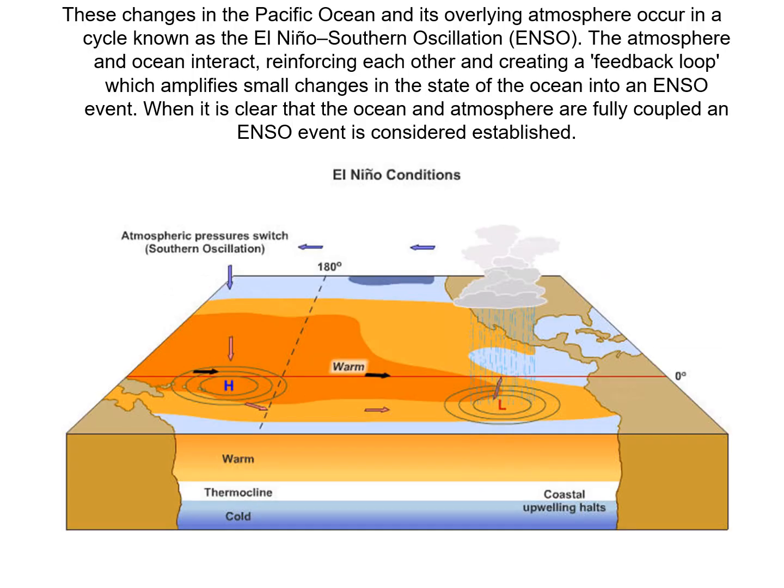Every few years, the surface atmospheric pressure pattern breaks down as air pressure rises over the western Pacific and falls over the eastern Pacific. This change in pressure weakens the trades, and during strong pressure reversals, east winds are replaced by west winds that strengthen the counter current. Surface water warms over a broad area of the tropical Pacific and heads eastward towards South America in a surge known as a Kelvin wave, which is an enormous wave perhaps 15 centimeters high but extending for hundreds of kilometers north and south of the equator.